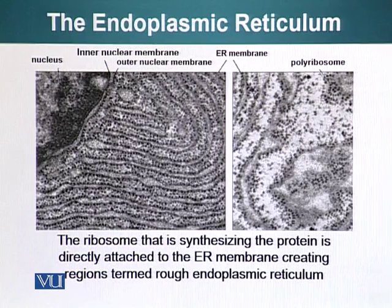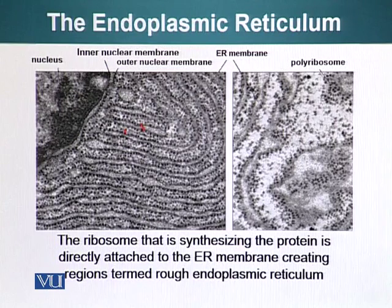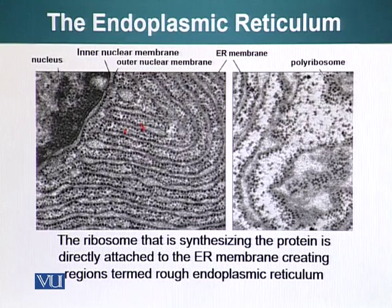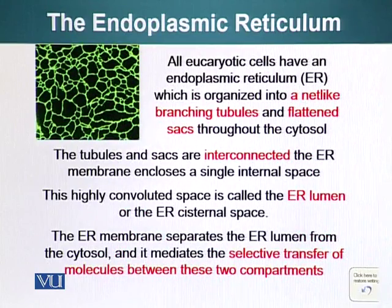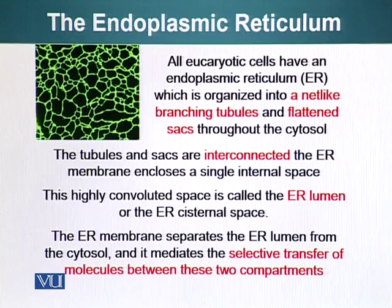Here you can see an electron micrograph of rough endoplasmic reticulum. The endoplasmic reticular membranes are studded with dark balls, which are ribosomes synthesizing proteins directly attached to the ER membrane, creating regions we call rough endoplasmic reticulum. All eukaryotic cells have abundant endoplasmic reticulum organized into net-like branching tubules and flattened sacs throughout the cytoplasm.